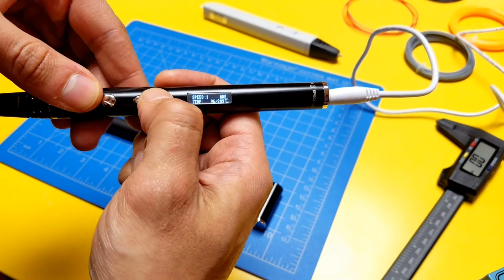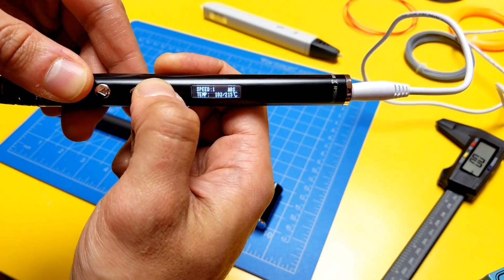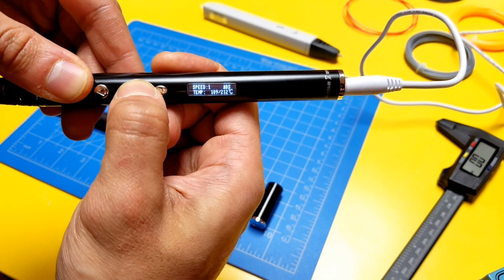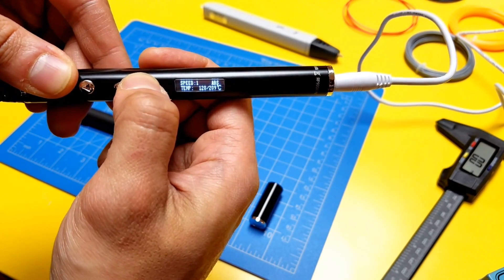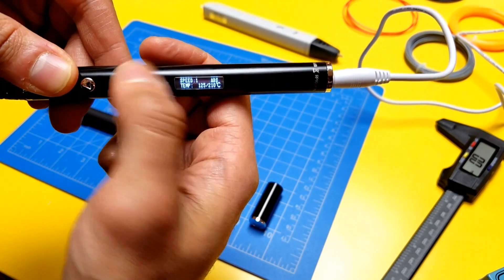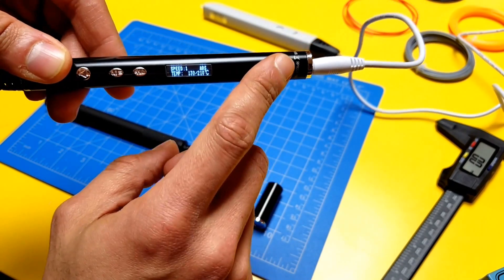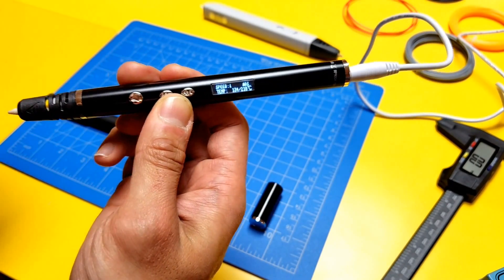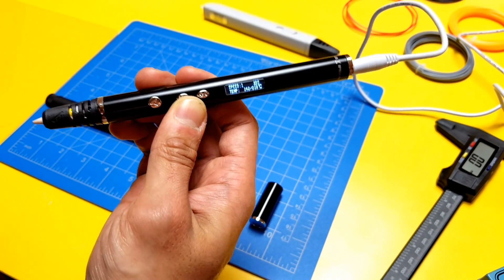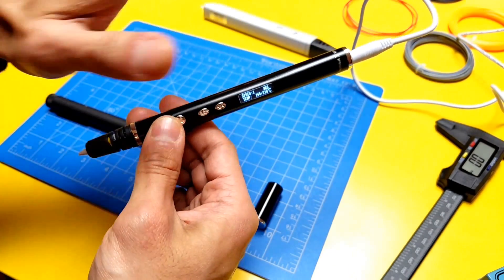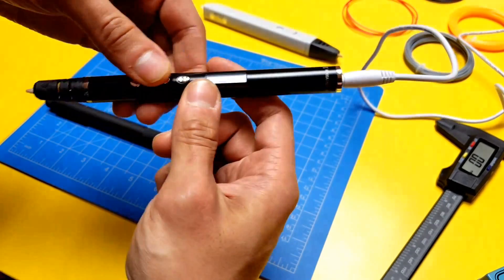So you can actually change the temperature in one degree increments, which is very nice. It goes from I believe from 130 centigrade up to 230. For ABS, 210 is the ideal temperature for this pen. It's lower than what you would use for a regular 3D printing machine. For the pen, it doesn't need as much heat, so 210 works very well. And you can also easily switch to say if you're going to PLA, 175.